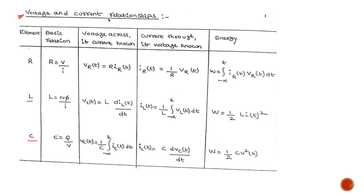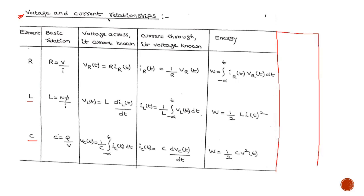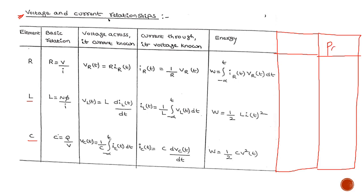The third column gives the voltage formula across each element, and the fourth column gives the current formula. In the fifth column we have energy. You can also add one more column for type of energy — whether it is stored or dissipated — and another column for power, since we can calculate power in each respective element.